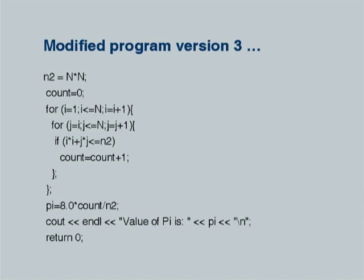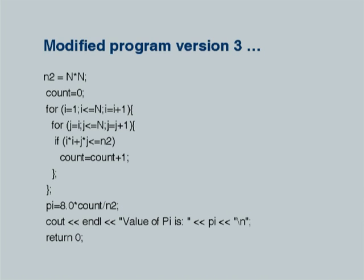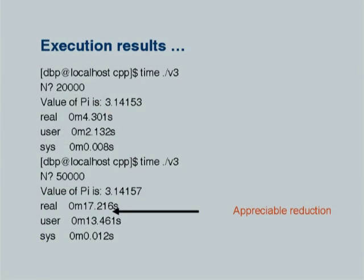A much better strategy is to realize that since I and J are symmetric — a point (I, J) and (J, I) behave identically inside or outside the circle — we only need to estimate the area over a triangle. So I varies from 1 to N, but J varies from I to N. Now estimating 1/8 of the area instead of 1/4, pi is computed as 8 * count / N2. With this modification, execution for n = 50,000 takes only 17.216 seconds — a meaningful reduction. We will stop here.